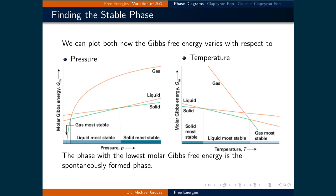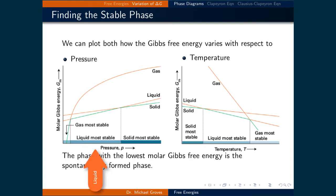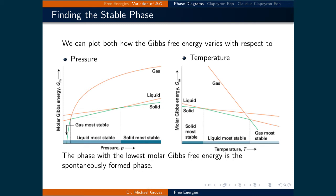All three temperature plots are lines since molar entropy is assumed constant. We determine the most stable phase by finding which is lowest on the plot. On the left plot where pressure varies, the gas phase spontaneously forms at low pressures. As pressure increases, the gas and liquid lines meet, representing a phase boundary. Beyond this, the liquid becomes most stable. As pressure increases further, the liquid and solid lines meet, representing another phase boundary, and at larger pressures the solid phase spontaneously forms.